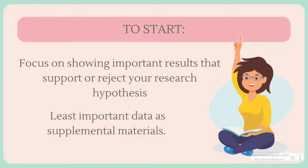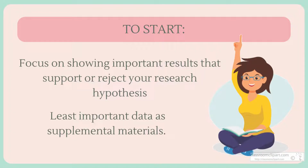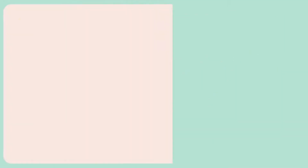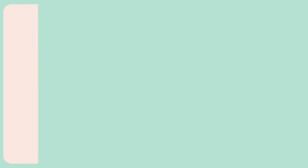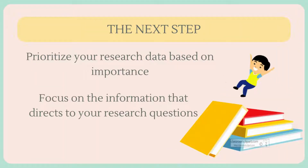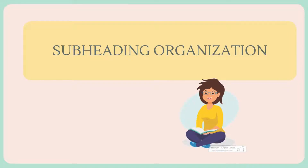The next step is to prioritize your research data based on importance, focusing heavily on the information that directly relates to your research questions using subheadings. The organization of the subheadings in the results section usually mirrors the method section, and it should follow a logical and chronological order. Subheadings within your results section are primarily going to detail major findings within each important experiment. The first paragraph of your results section should be dedicated to your major findings — findings that answer your overall research question and lead to your conclusion.